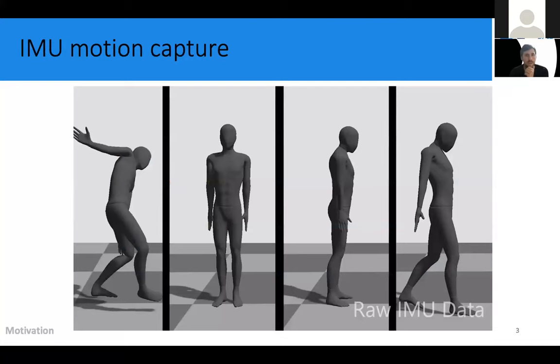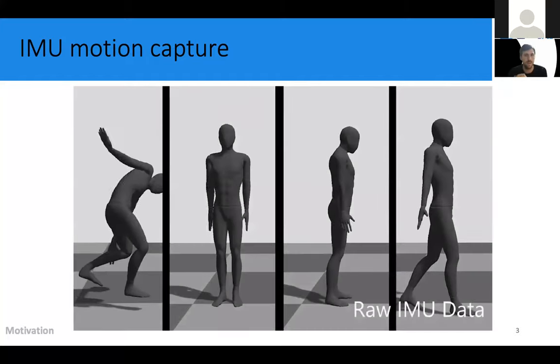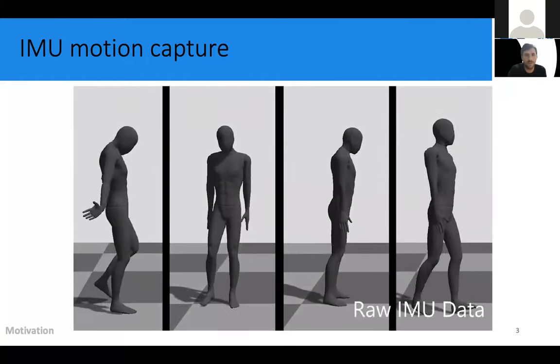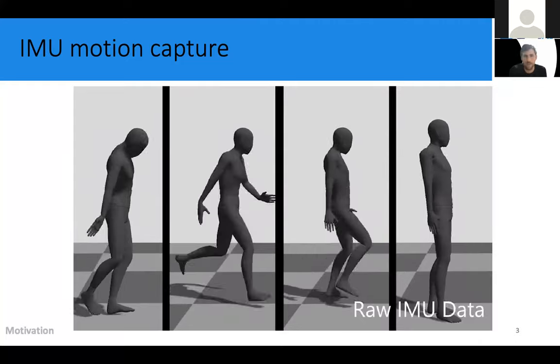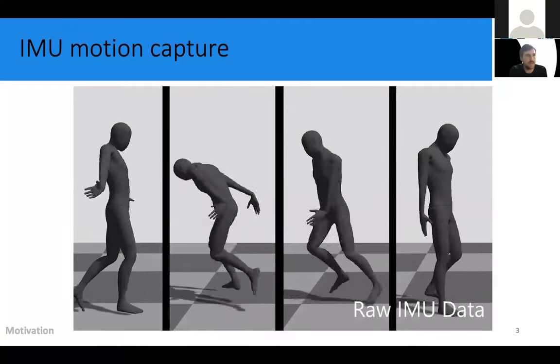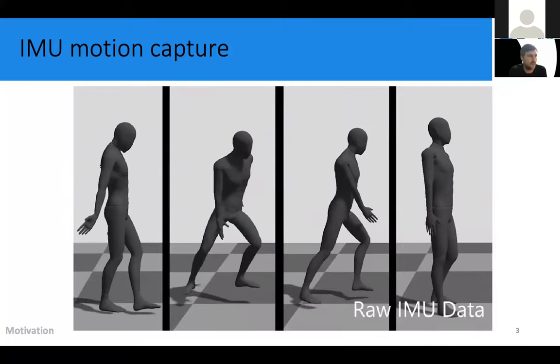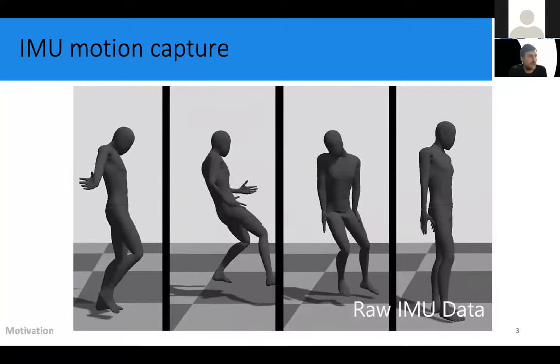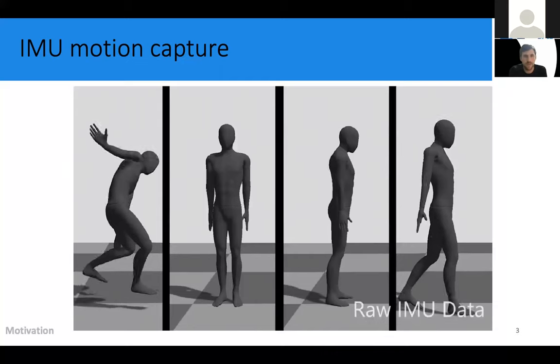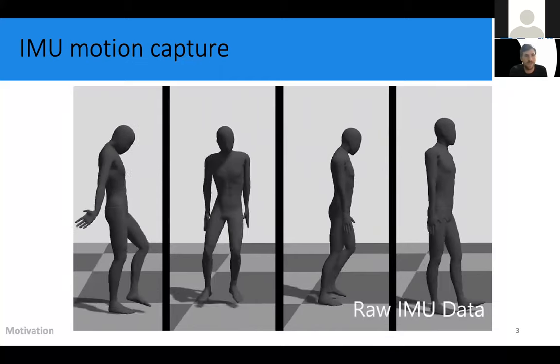So let's start with a bit of animation. These animations here were made from raw data recorded with an IMU-based motion capture solution. And as you can see, the quality of these pose estimations is pretty good, but something is missing.